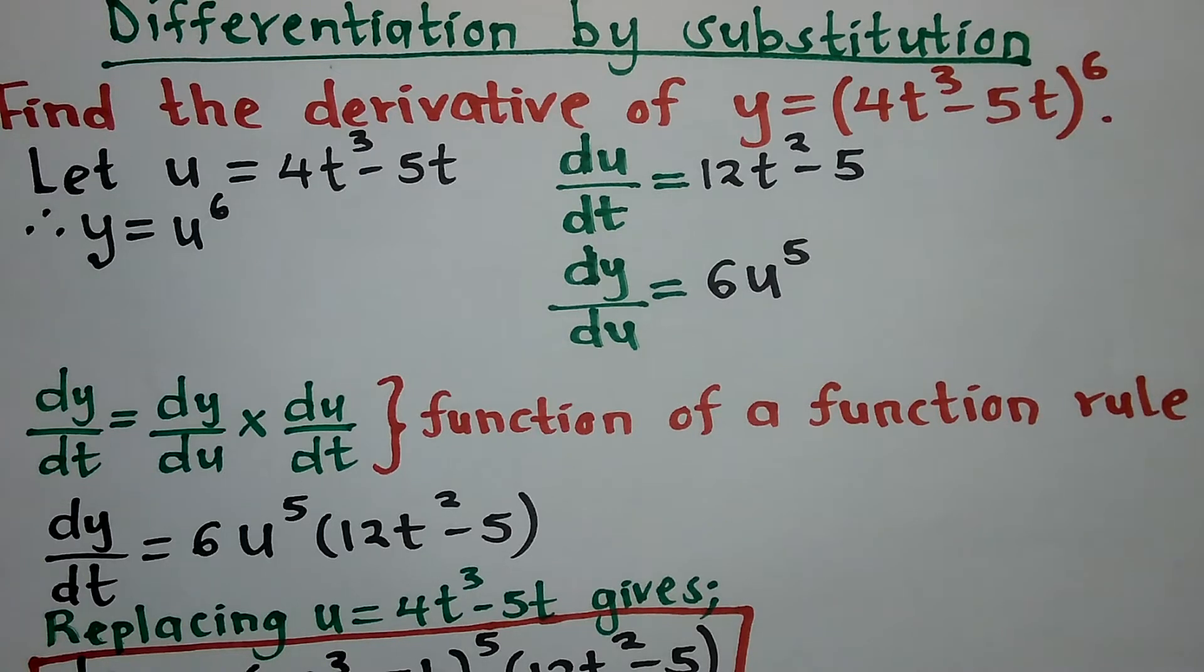Hello and welcome. In this example we'll be trying to differentiate by substitution. We've been asked to find the derivative of y = (4t³ - 5t)⁶.